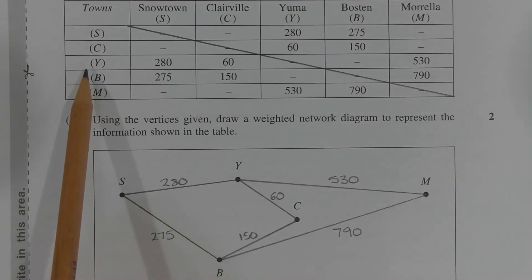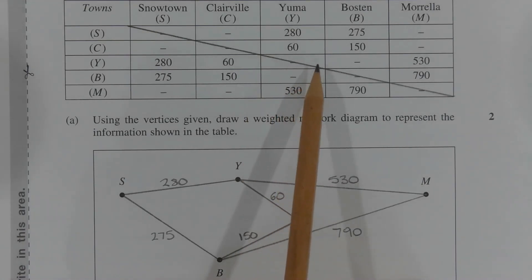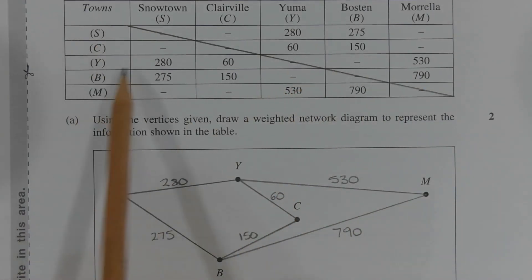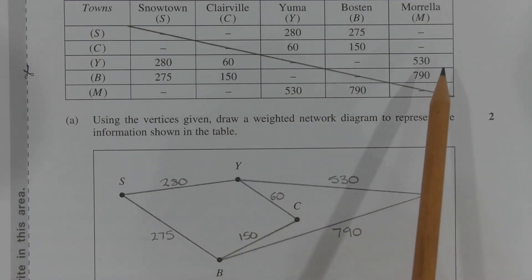Looking at the third row and analyzing the cells that are above the diagonal, we can see that town Y is connected to town M and the distance between those two towns is 530 kilometers. And that is indicated by drawing an edge between vertex Y and vertex M and writing 530 next to that edge.